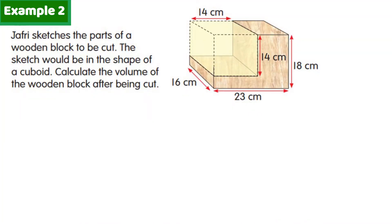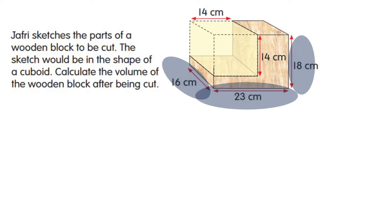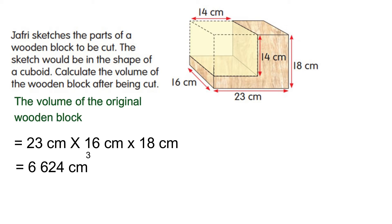Example 2: Jaffrey sketches the parts of a wooden block to be cut. The sketch will be in the shape of a cuboid. Calculate the volume of the wooden block after being cut. To solve the problem, first we need to find the volume of the original wooden block — identify the length, width, and height of the original wooden block.